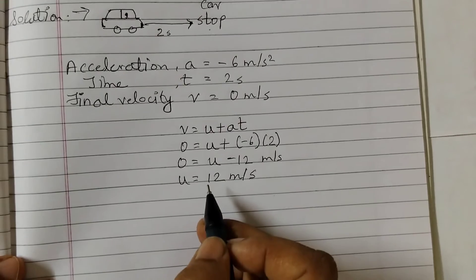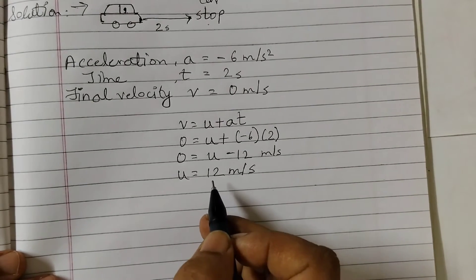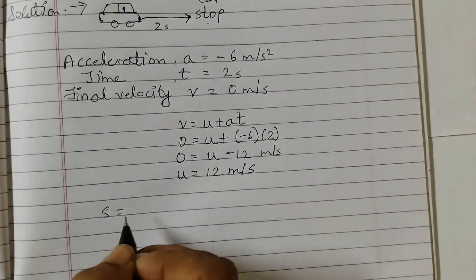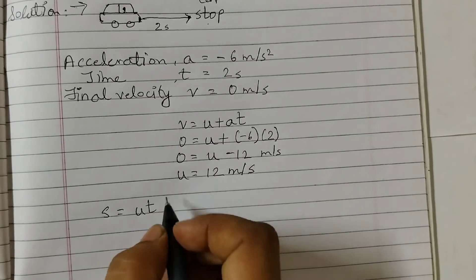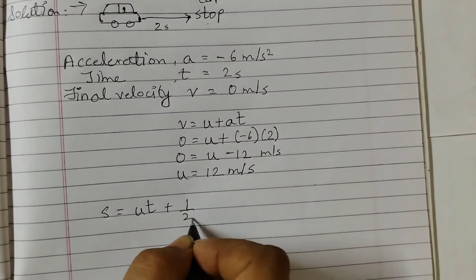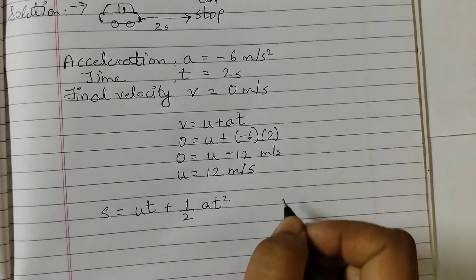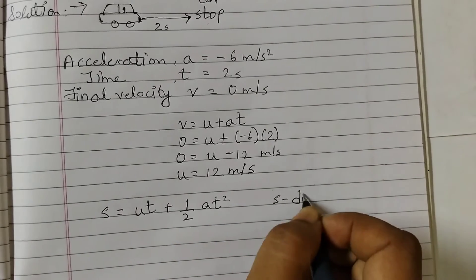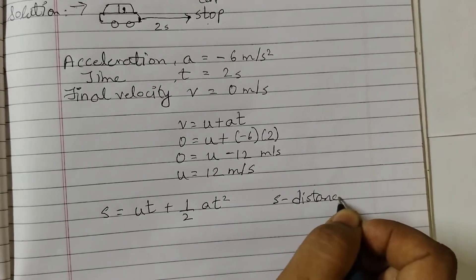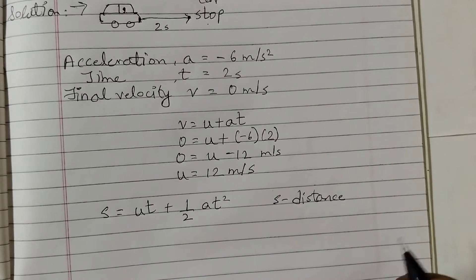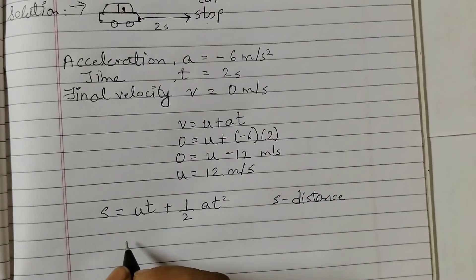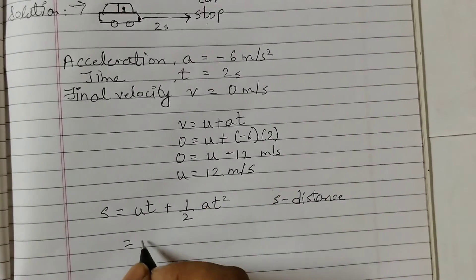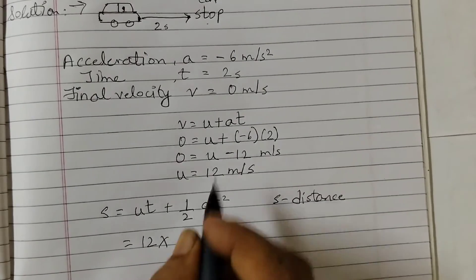We can use the other formula to find out the distance which is s equals ut plus half at squared. Here s is the distance traveled by the car after applying the brake.